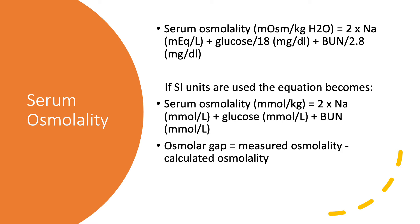How do we calculate serum osmolality? We do a basic metabolic panel, multiply sodium by 2, divide glucose by 18, divide blood urea nitrogen by 2.8, and add them all together. If using SI units, we multiply sodium by 2 and simply add glucose and blood urea nitrogen in millimoles per liter — no dividing needed. An osmolar gap is due to a substance we're not measuring, like alcohol, ethylene glycol, or methanol. This is very important in poisoning — there's a difference between the measured osmolality in the lab and the one we calculated, which is significant for suspecting certain poisons.